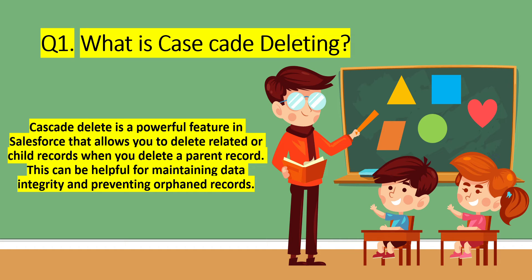Cascade delete is a powerful feature in Salesforce that allows you to delete related or child records when you delete a parent record. This can be helpful for maintaining data integrity and preventing orphaned records. Cascade deleting works on master-detail relationships — when we delete the parent record, the child records are also deleted.